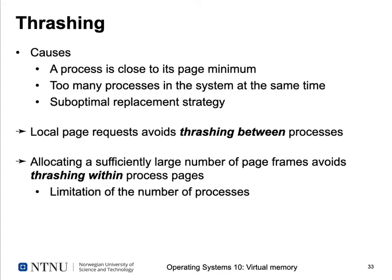The causes of thrashing are: a process is close to its page minimum, making it very likely that any code or data access causes a page fault; too many processes are in the system so each receives only a small share of memory; or the replacement strategy is suboptimal. Local page requests avoid thrashing between processes but can still cause thrashing within a process. To avoid intra-process thrashing, you must allocate a sufficiently large number of page frames per process, which requires limiting the total number of processes.